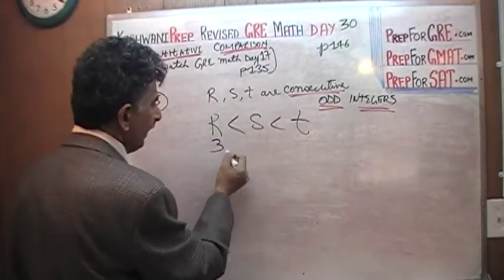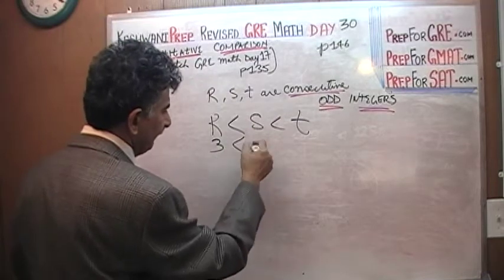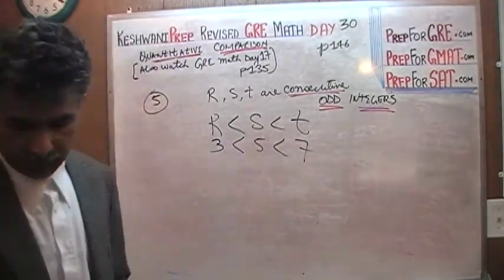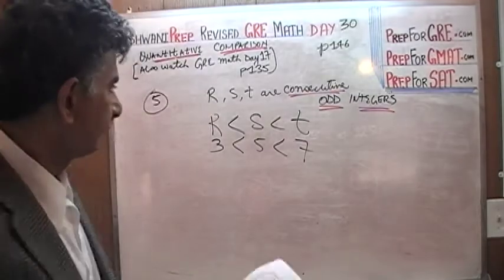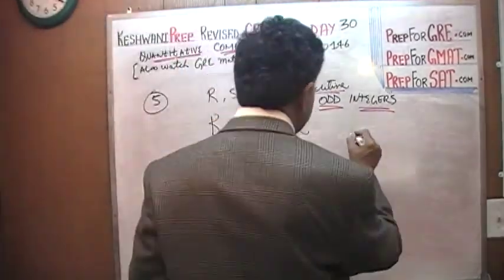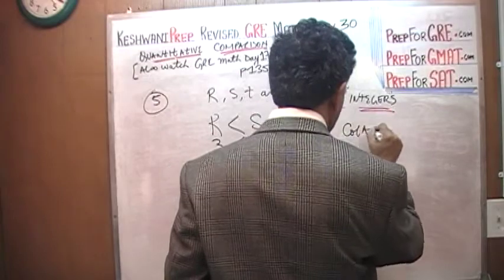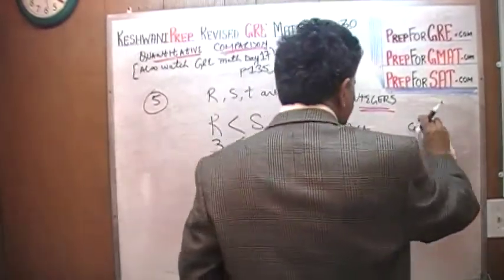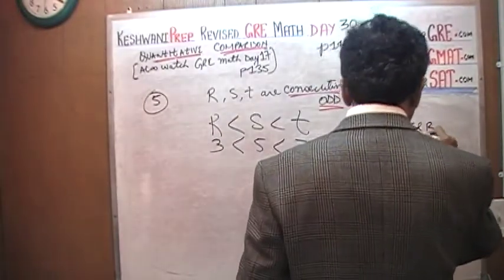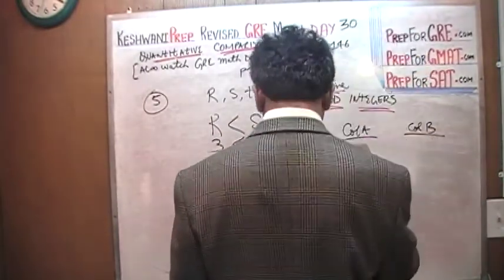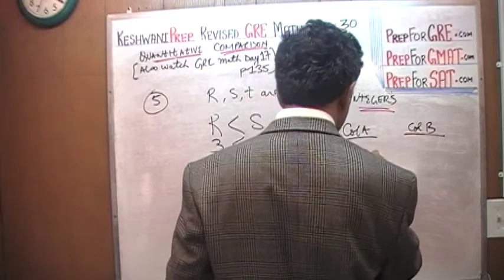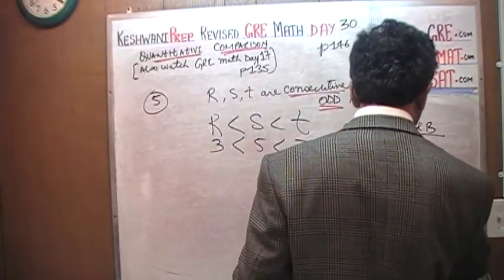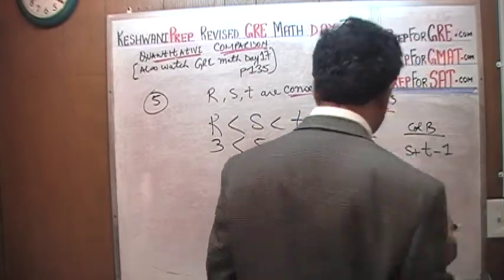If R is 3, the next odd integer, since R is less than S, the next one is going to be 5. 3 and then 5 and then 7. And let's look at our two columns. Let's do it here. Column A, column B. R plus S plus 1. S plus T minus 1. So, the very first thing we noticed.